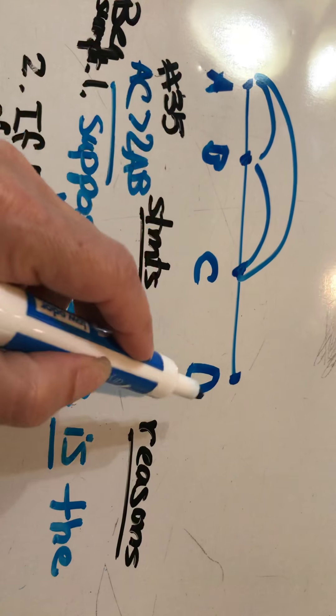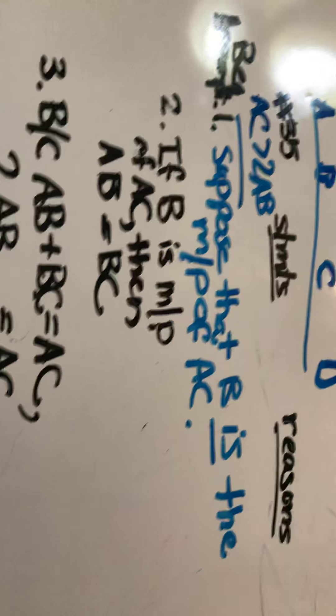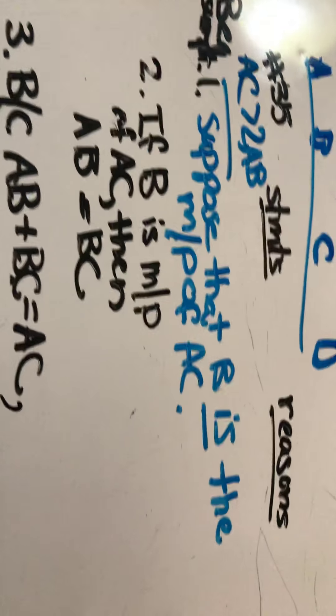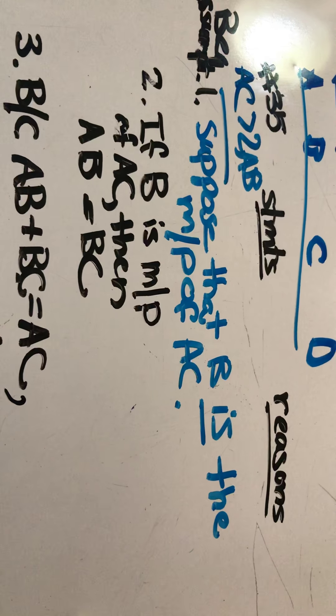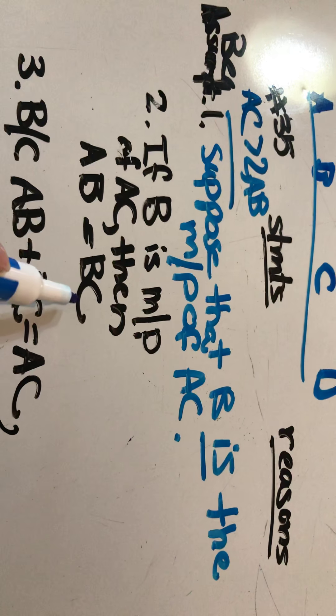Again, we're back to this line. So if B is the midpoint, then of AC, then AB equals BC.